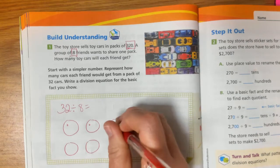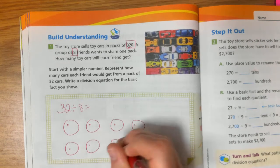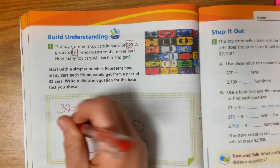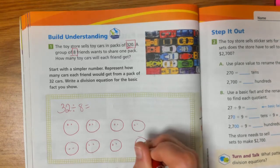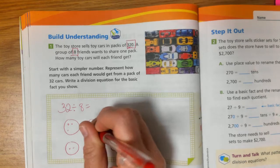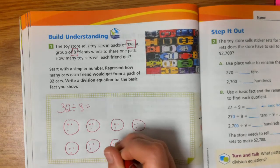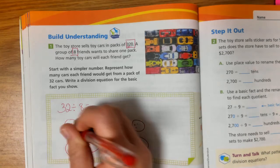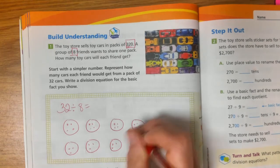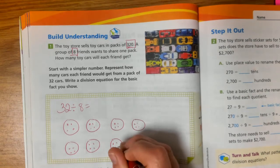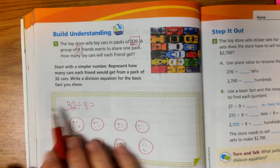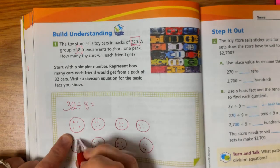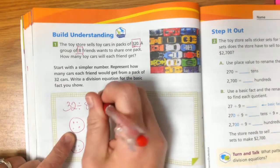And if I divide out my 32 evenly, 1, 2, 3, 4, 5, 6, 7, 8, 9, 10, 11, 12, 13, 14, 15, 16, 17, 18, 19, 20, 21, 22, 23, 24, 25, 26, 27, 28, 29, 30, 31, 32. Each friend, well not each friend, but the simpler problem would be 32 divided by 8, which equals 4.